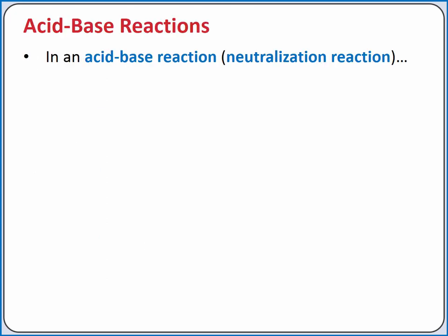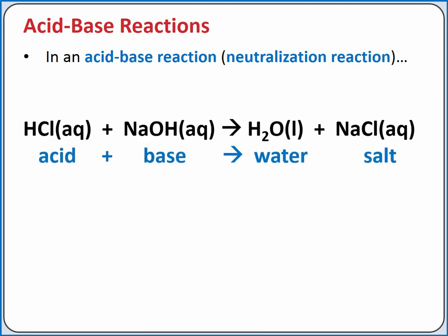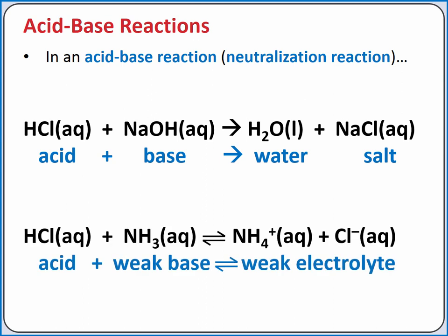Next, let's talk about reactions. An Arrhenius acid and base can react to produce water and a salt — this type of reaction is also called a neutralization reaction. For example, hydrochloric acid reacts with sodium hydroxide to produce water and sodium chloride, which is a salt. We could also produce a weak electrolyte; for example, if we have a weak base like ammonia, we produce the ammonium ion.